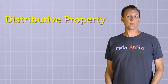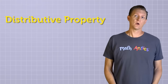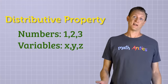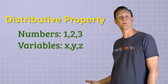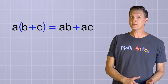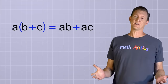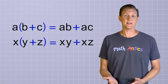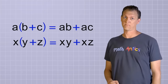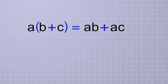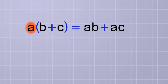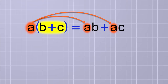So the distributive property works exactly the same way whether you're working with numbers or variables. In algebra, you'll often see the distributive property shown like this: a times the group b plus c equals ab plus ac. Or you might see it with different letters like x, y, and z, but the pattern will be the same. This pattern is just telling you that these two forms are equivalent. In the first form, the factor a is being multiplied by the entire group. But in the second form, the factor a has been distributed, so it's being multiplied by each member of the group individually.